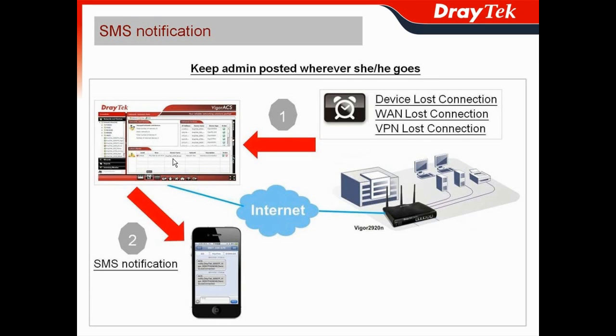When there is an alarm, it will display in the Vega AC-SSI web user interface, and then an SMS notification will also be sent to the admin's cell phone.